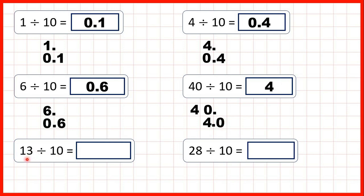Now, 13 divided by 10. We write out the number 13, copy down the decimal point, and we're dividing by 10, so the digits move one square to the right. We copy this 3 down, and copy this 1 down one square to the right, and we get 1.3 as our answer.